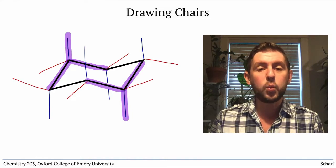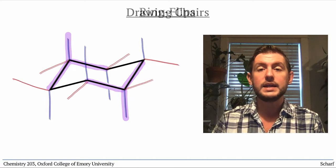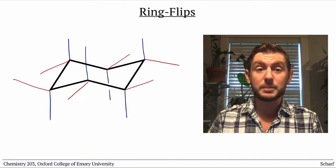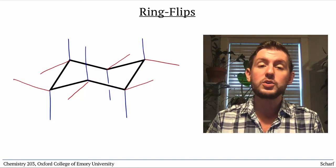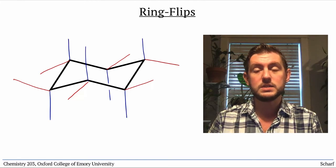So if this is one chair conformation of a given cyclohexane, how do we draw its ring-flipped version? There are two approaches to this, but we'll only cover one in this video.